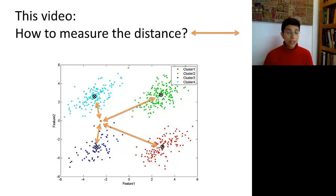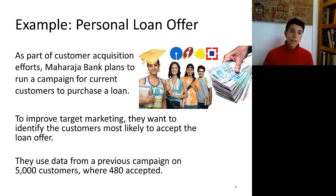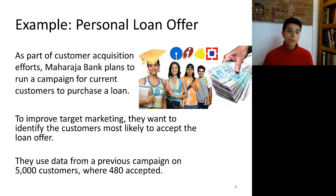Of course, we can use lots of different distances, so let's start very simple and then move on to what we're going to call statistical distance. We're going to use the same personal loan offer example from the first video. The bank used data from a previous campaign where they sent out the offer to 5,000 customers, and 480 of them accepted the offer.